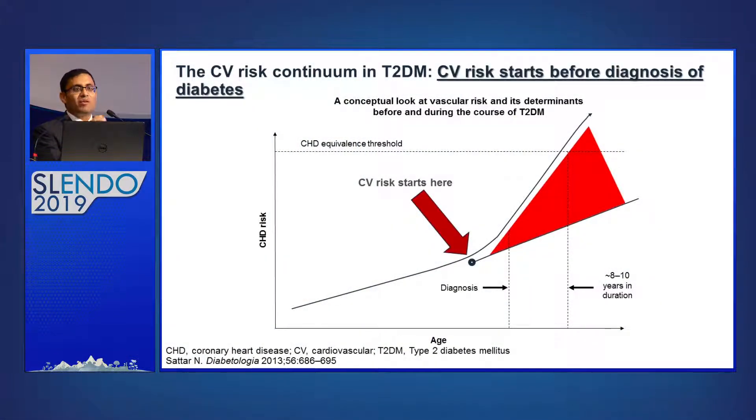First, I'd like to explain why we are so keen on discussing cardiovascular protection. This graph, published around 20 years ago in the New England Journal by Hafner, showed that a patient with diabetes even without an MI has a risk of MI much greater than a non-diabetic patient who has already had one episode of MI. This cardiovascular risk is a continuum in type 2 diabetes, and this risk of cardiovascular events starts even before you diagnose diabetes — arising from a common soil hypothesis about atherosclerosis.